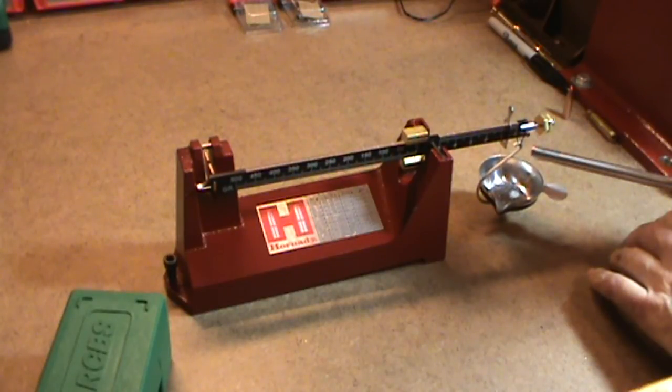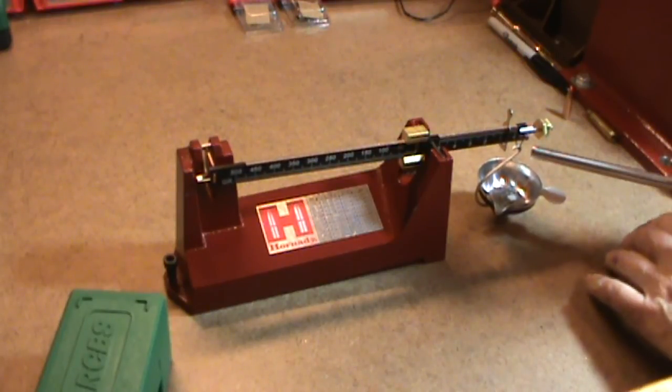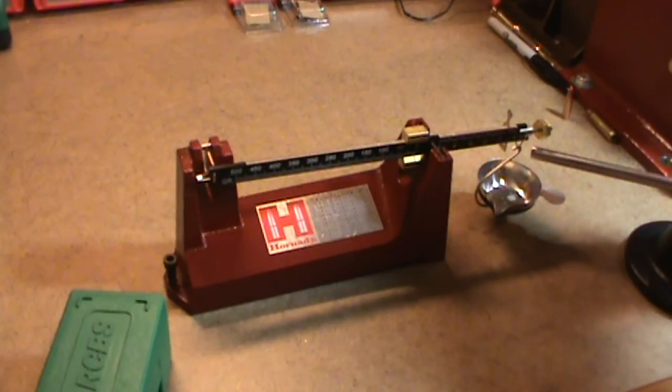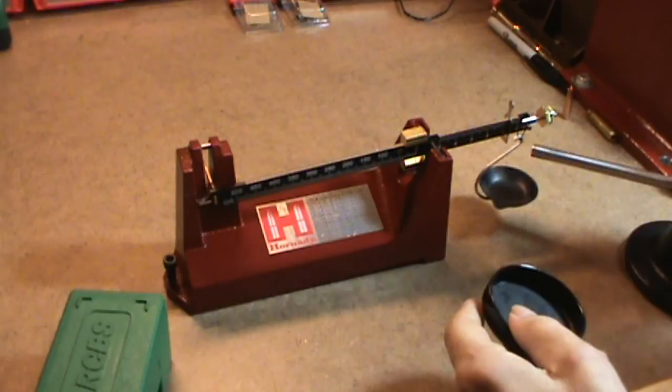Now, I'm going to continue trickling. And it's nice and smooth, nice and constant all the way through the range. From bottom to top. So, this scale obviously has no problem with sticking. And it's relatively accurate.